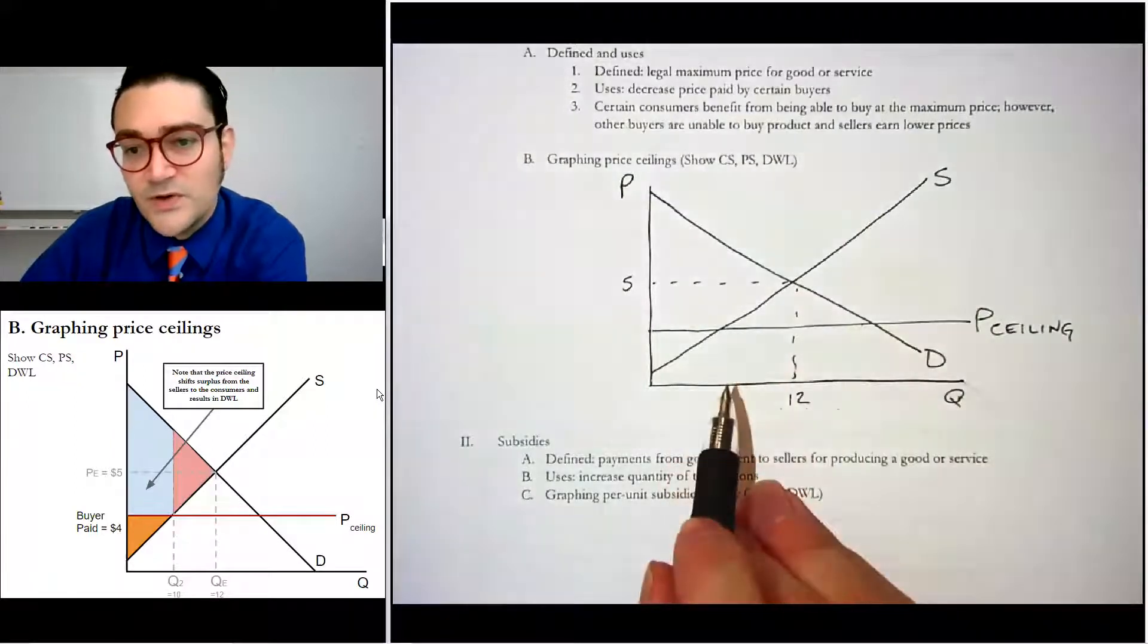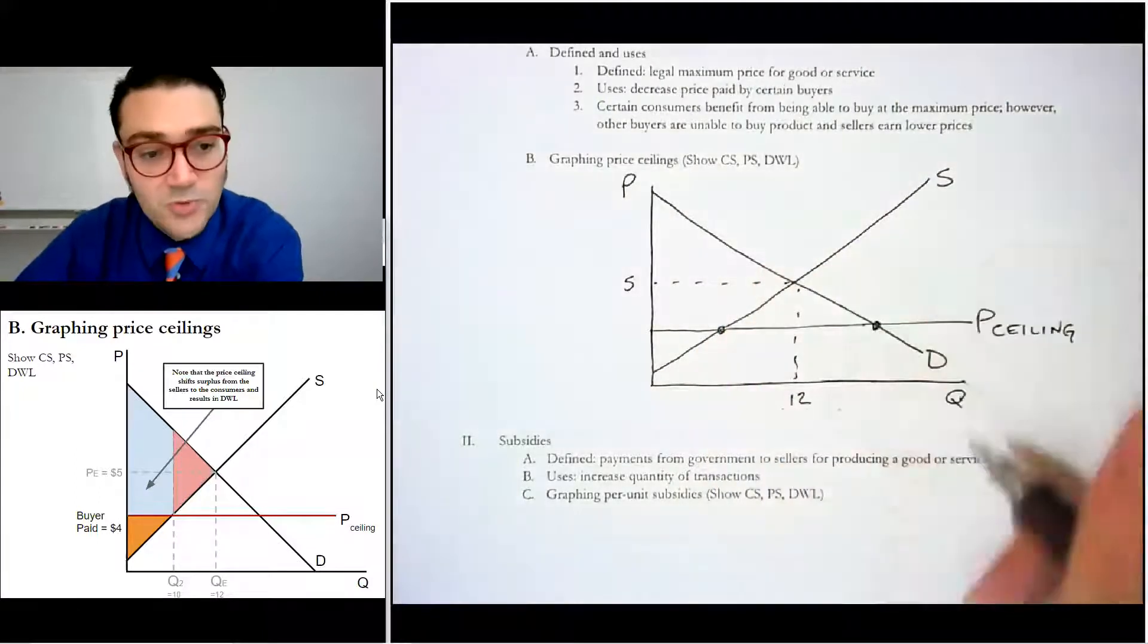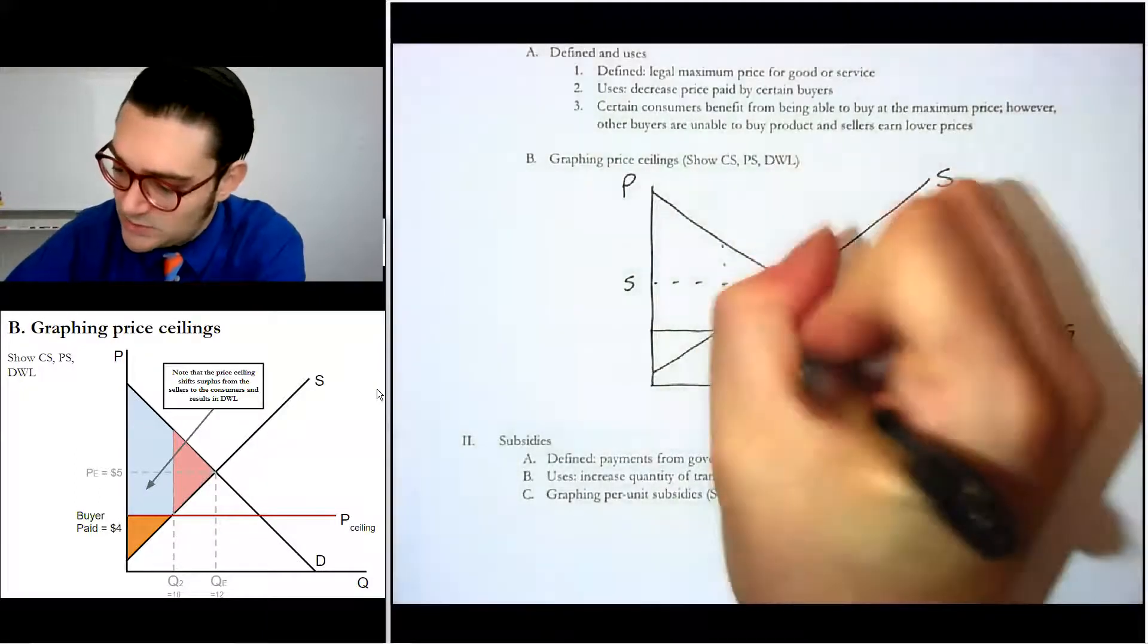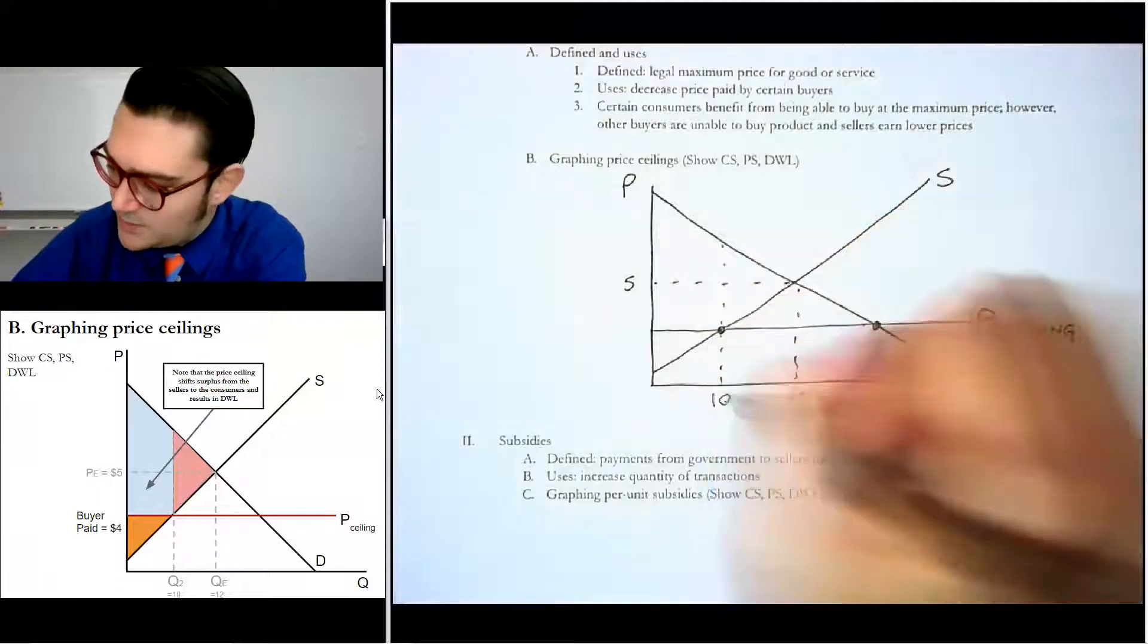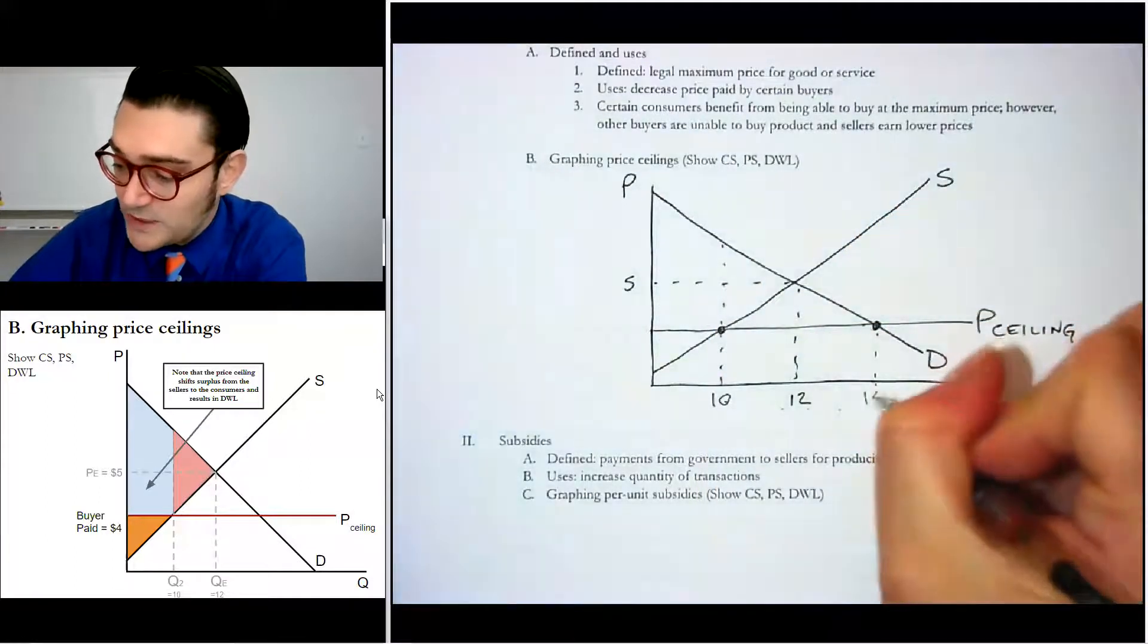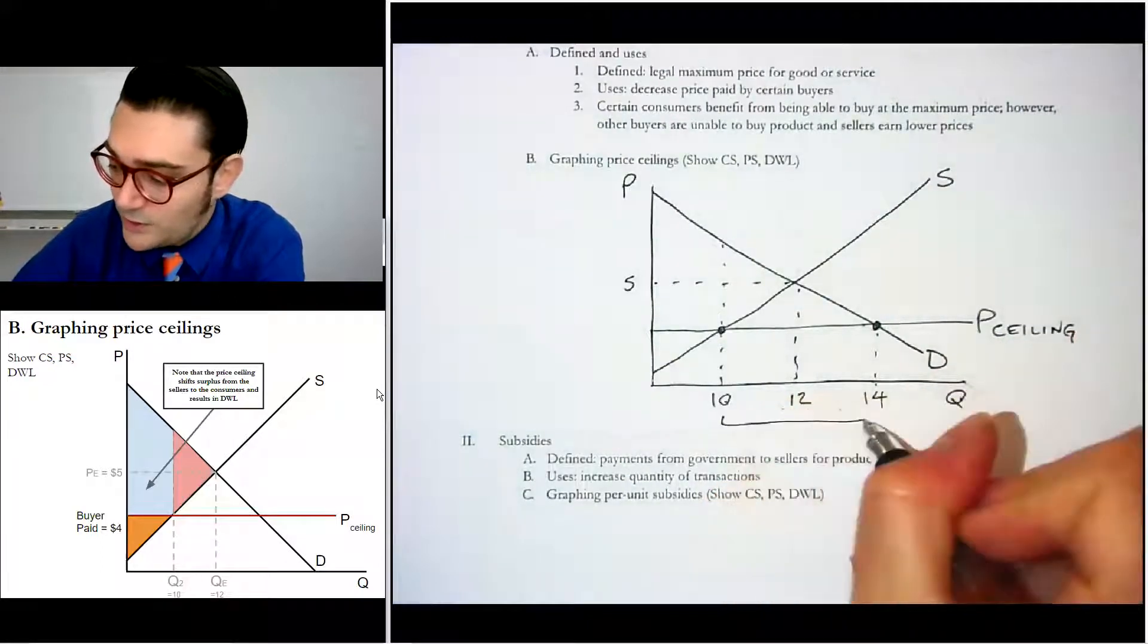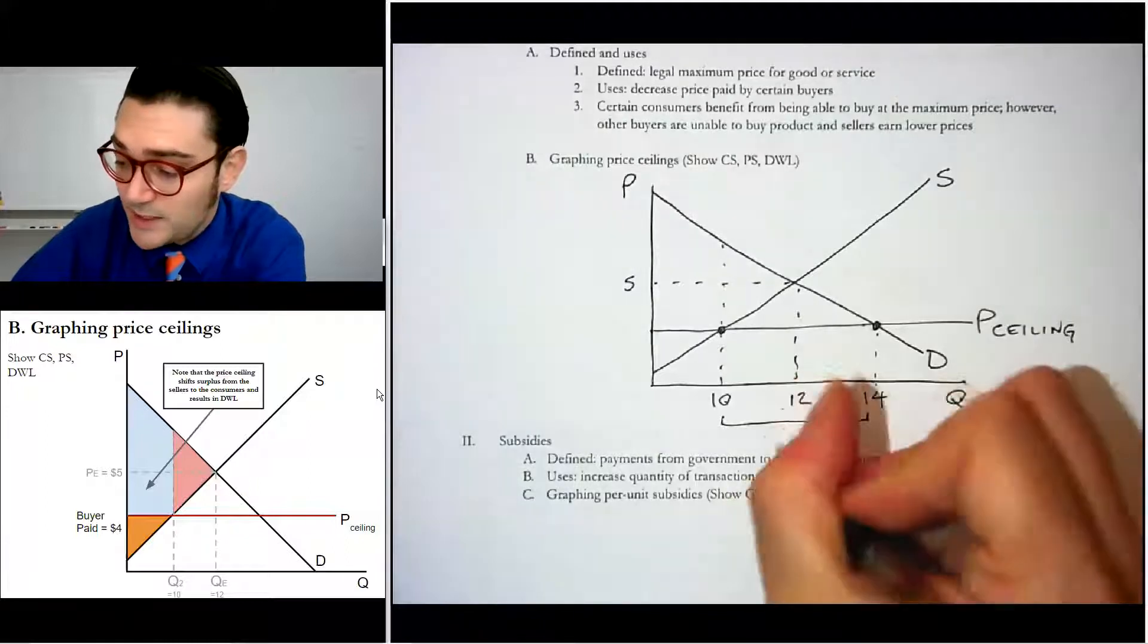What sometimes I find it helpful to do is to actually say, well, you know, you've got this point and this point, and what would we say? We said this was 10 here. And we don't have a number here, but I'm just going to draw that one and say it's 14 because we know that this amount, where quantity demanded is bigger than quantity supplied, is a shortage.